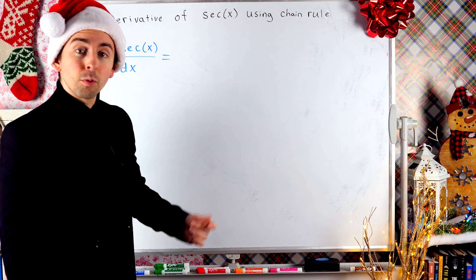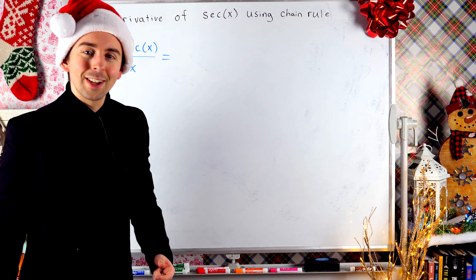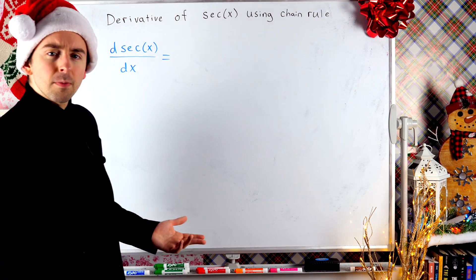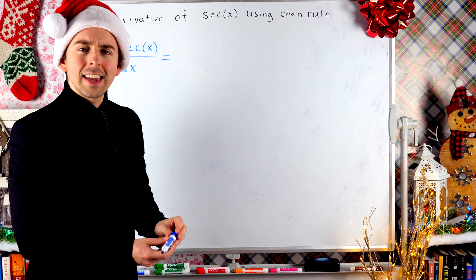Plus, if you forget the derivative on a test, you could go through this quick chain rule to figure it out. How are we going to find the derivative of secant using the chain rule? Well, what is secant?